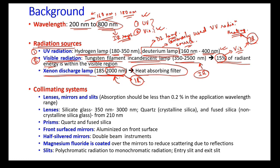The xenon discharge lamp generates a lot of heat and its cost is very high, so it is not commonly used when designing a UV-visible spectrophotometer.